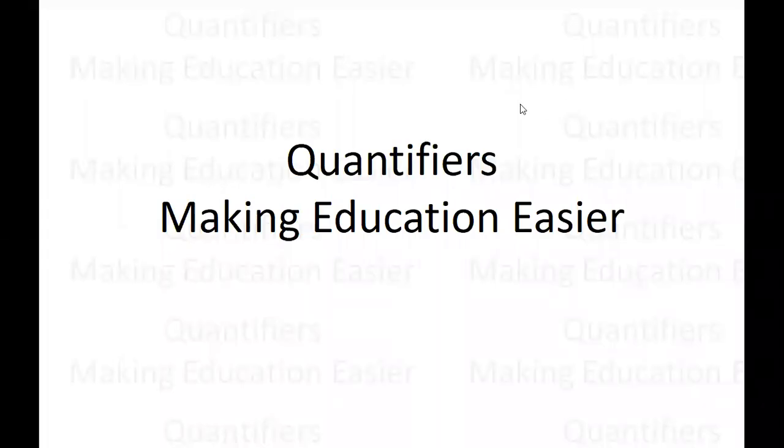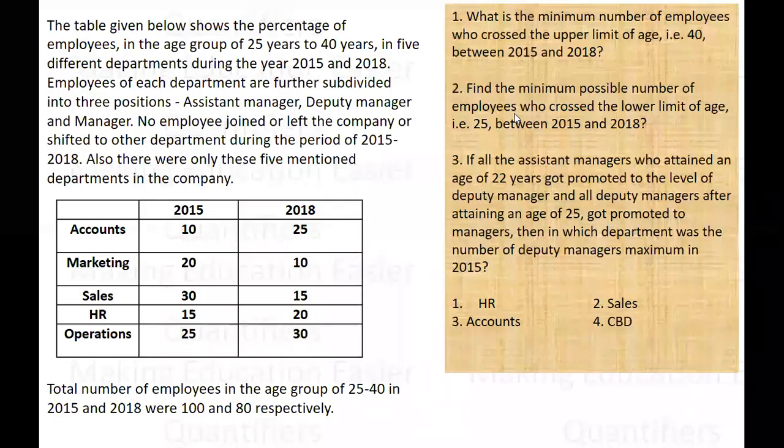Hello everyone. This is our set of the day. There are some employees in five departments of a company. The departments are Accounts, Marketing, Sales, HR, and Operations. The percentage of employees in the age group of 25 to 40 years is given.